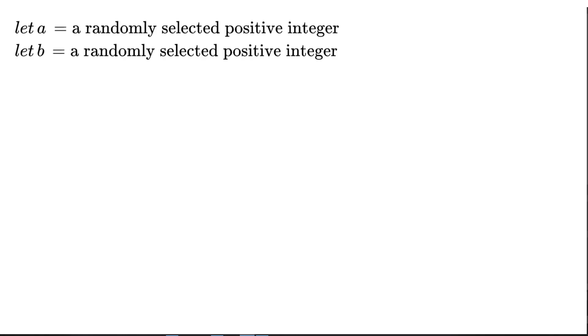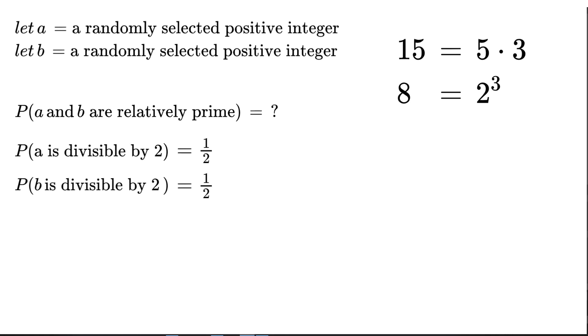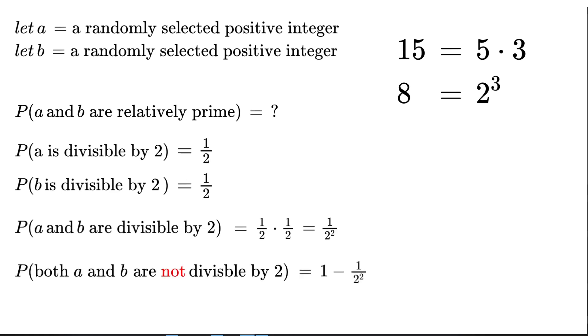An interesting fact about this product formula is that we can use it to determine the probability that two randomly chosen integers are relatively prime. Let a and b each equal a randomly selected positive integer, and we want to find the probability that they are relatively prime — meaning a and b don't have common factors. For instance, 15 and 8 would be relatively prime since they share no common factors. The probability that a single number isn't divisible by 2 is 1/2, so the probability that both a and b aren't divisible by 2 is 1 − 1/2².